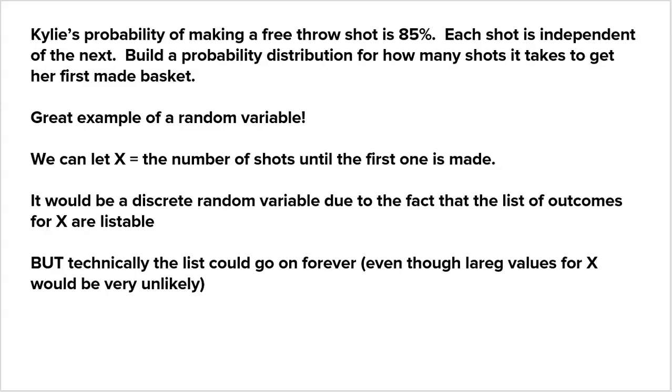Kylie's probability of making a free throw shot is 85%. We know that she has a 15% chance of missing a free throw. Each shot is independent of the next. Build a probability distribution for how many shots it takes to get her first made basket. This is a great example of a random variable. X represents how many shots it takes to get her first basket. How many shots could it take her to get her first basket?